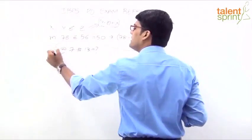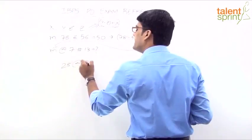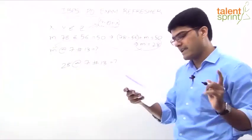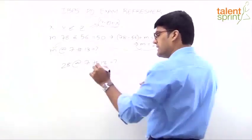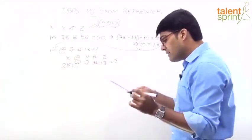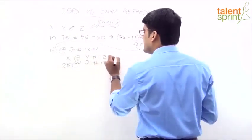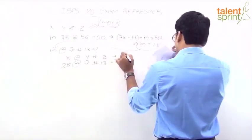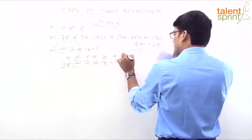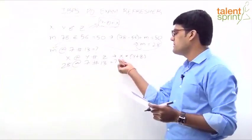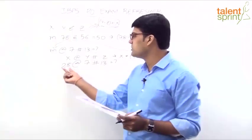Substitute this 28 here. So we have 28 at the rate 7 hash 13 equals to question mark. Now apply that rule, at the rate hash. First rule, x at the rate y hash z. x at the rate y hash z. Means what? x is multiplied by the sum of y and z. This means x is multiplied x into y plus z. If x is multiplied by the sum of y and z. That's what we need to do.